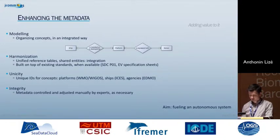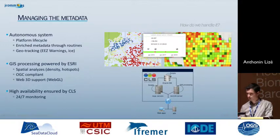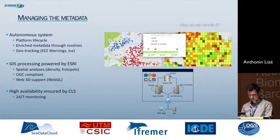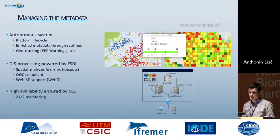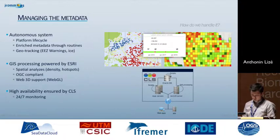Once we have done all that, we can fuel an autonomous system. Every cruise and every platform entering the system will be tracked automatically by a lot of scripts and process procedures. Because we are also collecting metadata from the GTS and the GDAC in near real time, we can set automatic statuses on these elements. We also do some GIS processing.